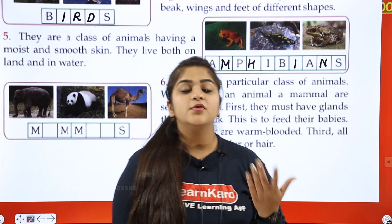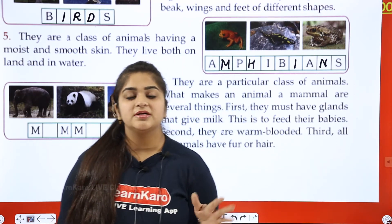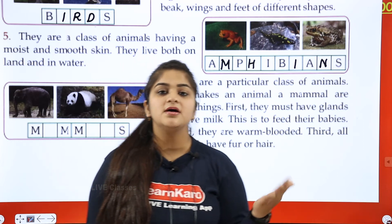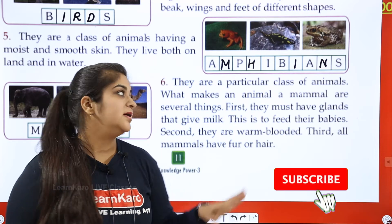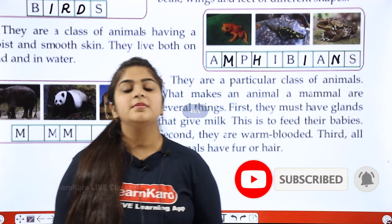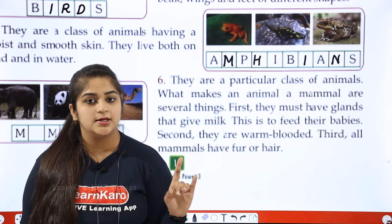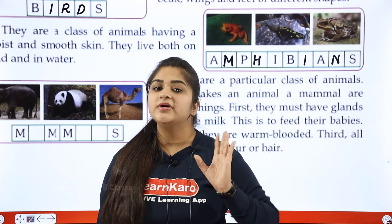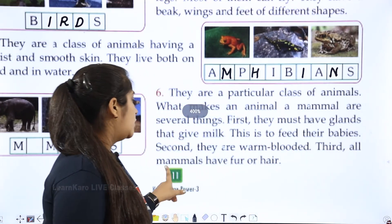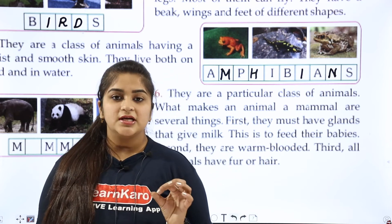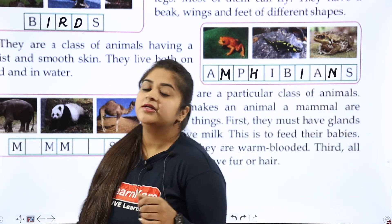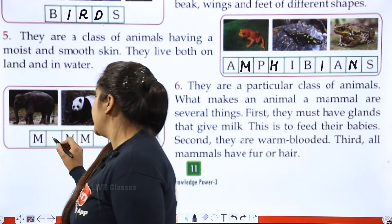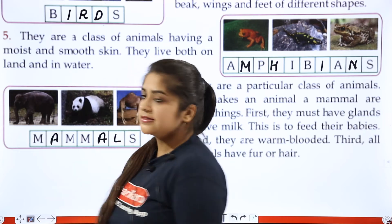Cold-blooded animals change with the temperature around them, but warm-blooded animals do not change — no matter what the surrounding temperature is. These animals either have fur or hair. These animals are known as mammals. M-A-M-M-A-L-S.